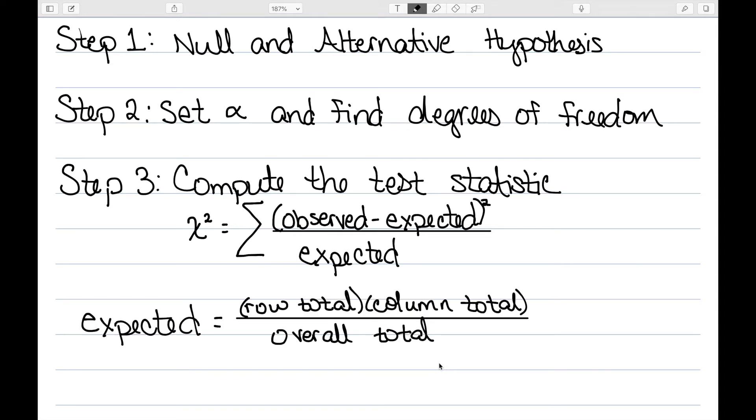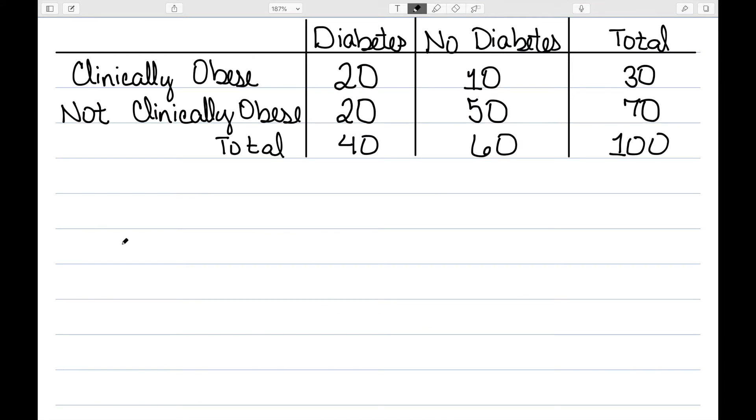And the expected value comes from the row total times the column total divided by the overall total. So let's look at our problem and see if we can figure this out. We need to start by finding all of our expected values. So we'll start with, we'll call this one, two, three, and four. These are my four cells that I need to compute the expected value for.